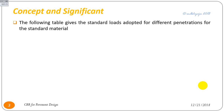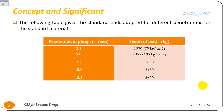The following table gives the standard loads adopted for different penetrations for the standard material. The normal CBR of subgrade is taken at 2.5 mm or 5 mm penetration. The standard load for 2.5 mm penetration is 1370 kg, and the standard load for 5 mm penetration is 2055 kg.